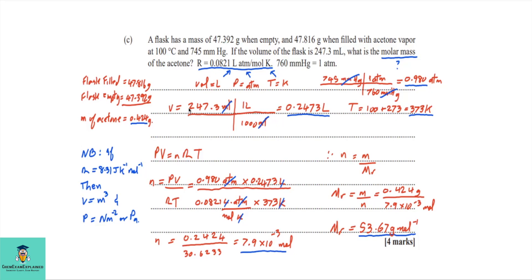We are now looking at Part C. A flask has a mass of 47.392 grams when empty and 47.816 grams when filled with acetone vapor at 100 degrees Celsius and 745 millimeter mercury. If the volume of the flask is 247.3 milliliters, what is the molar mass of the acetone? We were given the molar gas constant as 0.0821 liter atmosphere per mole per kelvin, and the conversion factor where one atmosphere equals 760 millimeter mercury. The units given in the molar gas constant are liters for volume, atmosphere for pressure, and kelvin for temperature.